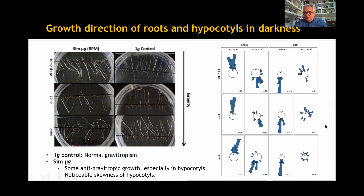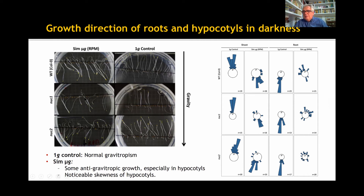A slight antigravitropic preferential direction of the roots was detected in the NUC1 mutant and even less pronounced in the wild type, but not in the NUC2 mutant. In the case of hypocotyls, the antigravitropic growth was more evident in all genotypes, but the growth direction was never coincident with the vertical axis. A conspicuous skewing of hypocotyls in the conditions of action of light and gravity was observed, especially relevant for the wild type seedlings, and it appeared relatively attenuated in the two mutant lines.